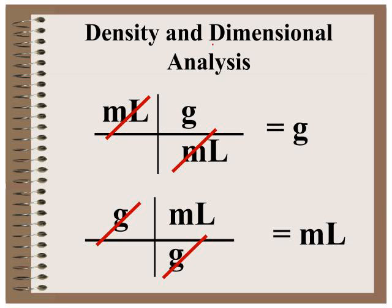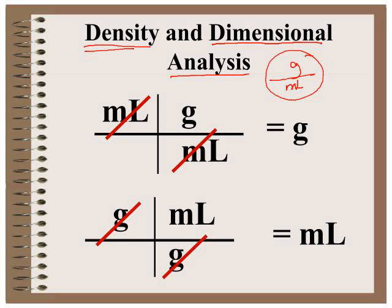We're also going to use dimensional analysis to help us with problems that use density within them. We know that density is a mass volume ratio so any number that is a ratio can be used as a conversion factor. So if we knew the density of an object to be 2.0 grams per milliliter then we could use that value as a conversion factor.